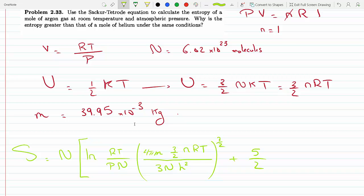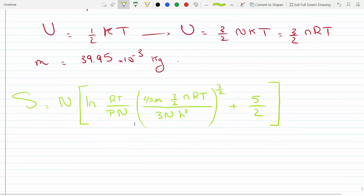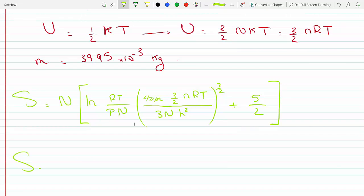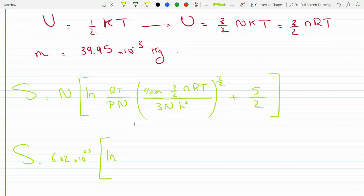Now all we have to do is plug in the numbers. N we said is 6.02 times 10 to the 23 ln. R is 8.31, temperature is 300, divided by the pressure. This is atmospheric pressure, so 1.01 times 10 to the 5.